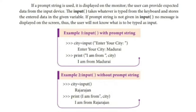Example 2: Input without prompt string. city equals input. Rajarajan. Next line, print within bracket "I am from", city. So the answer will be printed as "I am from Rajarajan" instead of city name.